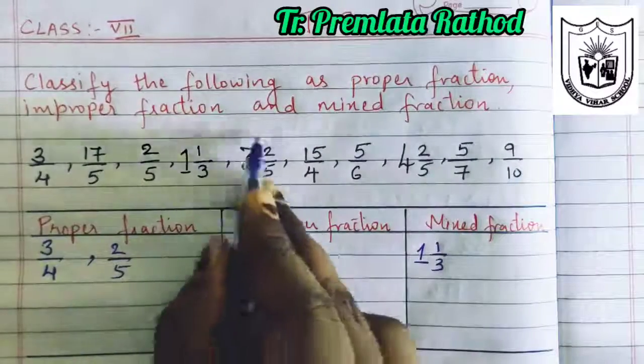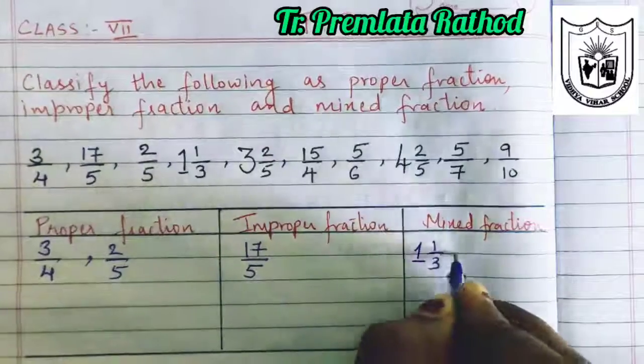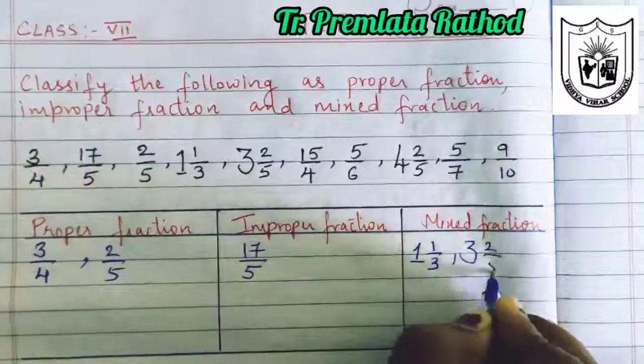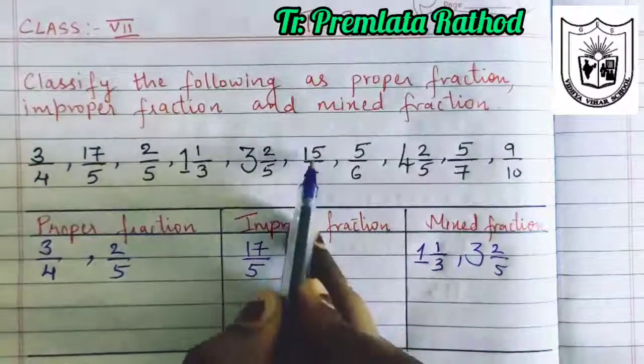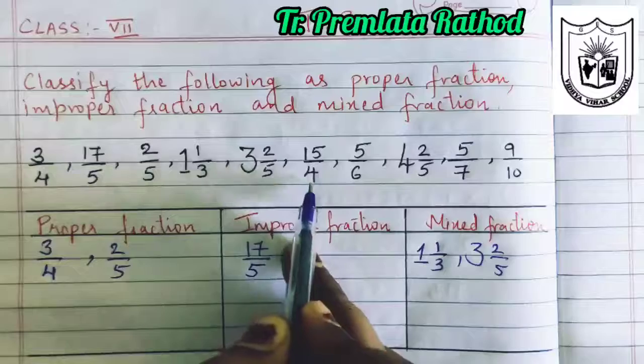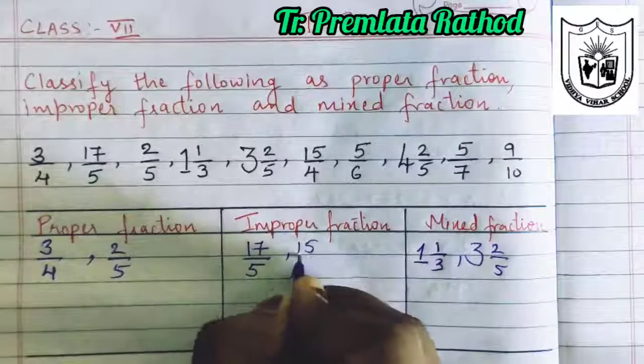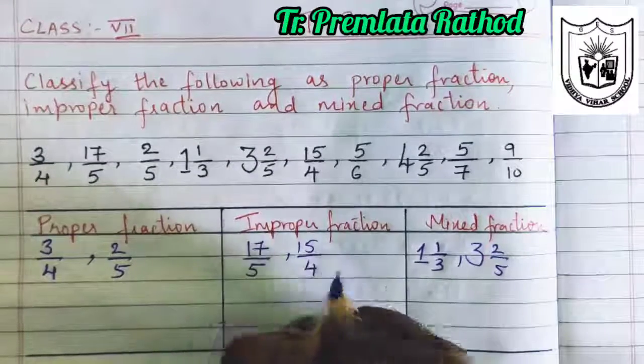Next, again, this is a mixed fraction. 15 by 4 — numerator is greater compared to denominator, so this will be an improper fraction.